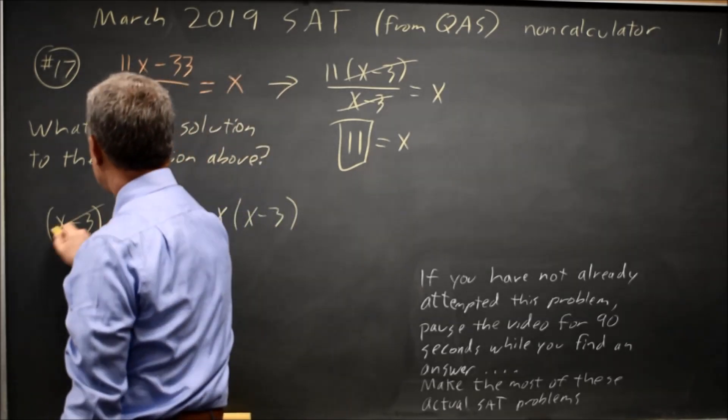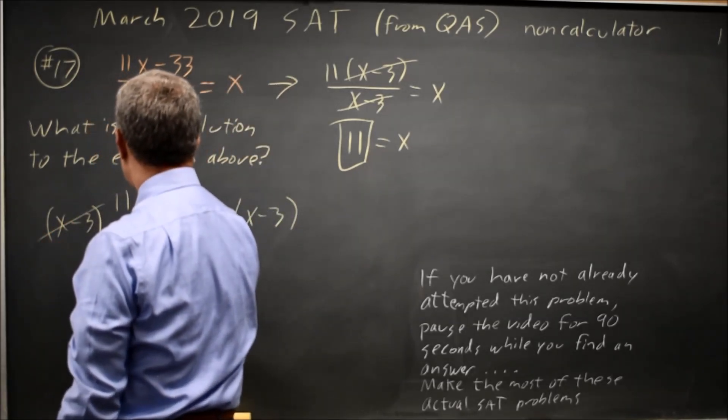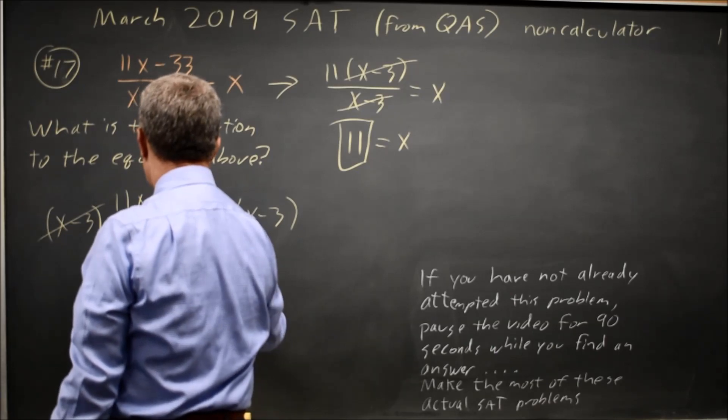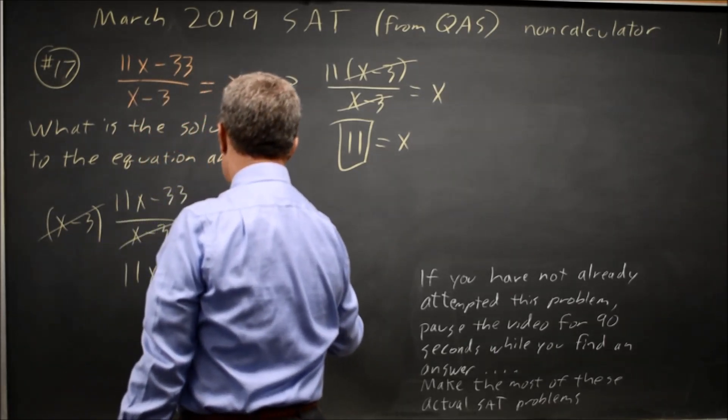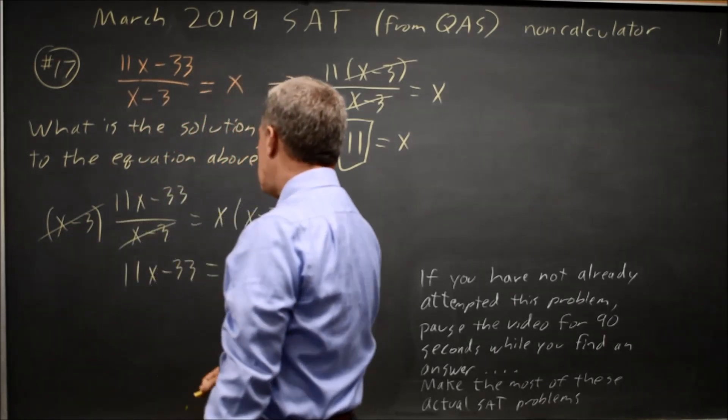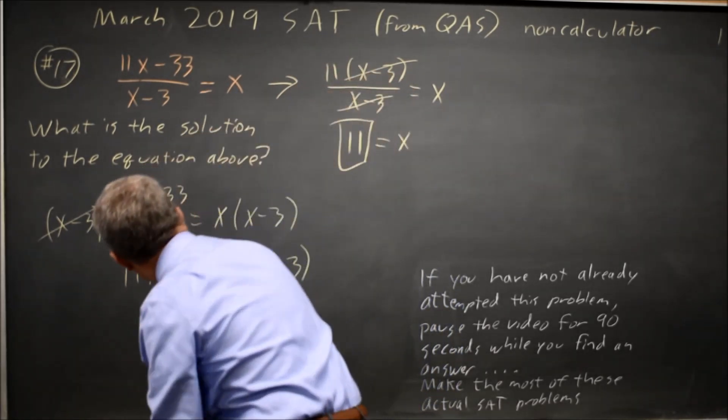And I get x minus 3 times 1 over x minus 3 is 1, so 11x minus 33 equals x times x minus 3. Hopefully we recognize that this has a factor of x minus 3.